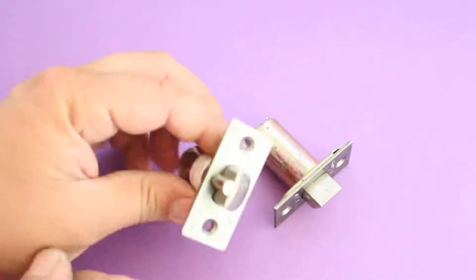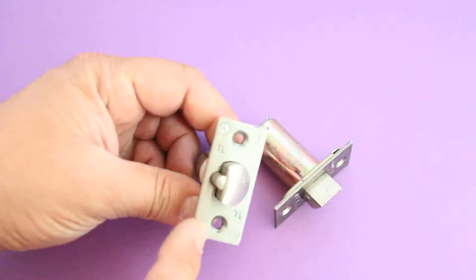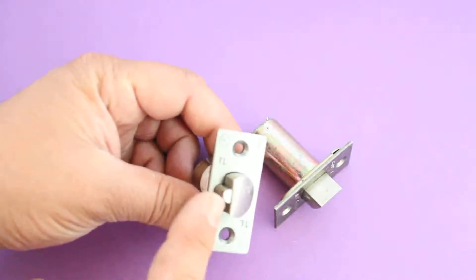The differences with these type of latches is that this one is used for entrance sets or any other type of lock function apart from passage or privacy. The reason being is it has this little extra latch on the side.